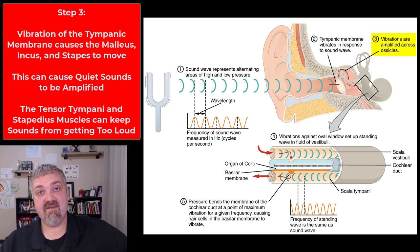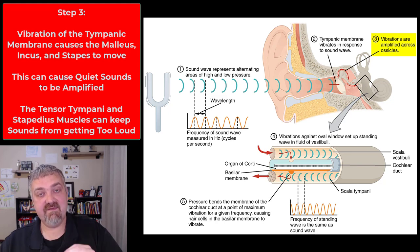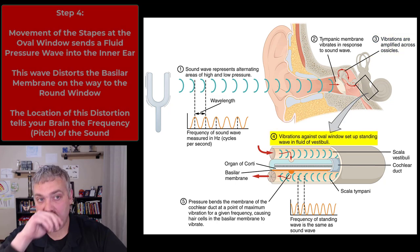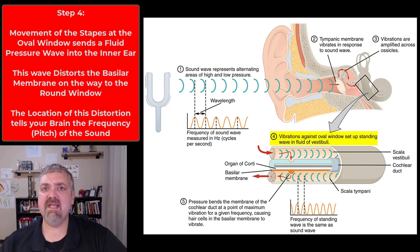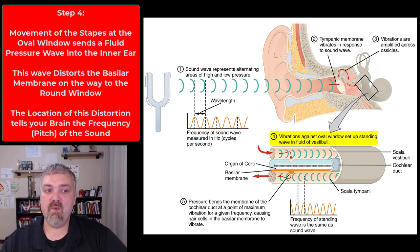So far the sound waves have entered the ear — giving us directional sensitivity, where the sound came from — traveled through our ear canal and struck our tympanic membrane, which as it vibrates moves the three levers: the malleus, incus, and stapes. Now we're at the actual inner ear. Step four: vibrations against the oval window set up a standing wave in the fluid inside. As this wave travels from the oval window to the round window, the cochlea gets the information it needs to hear.